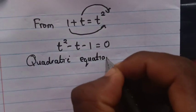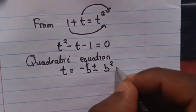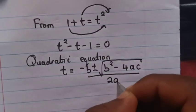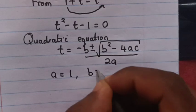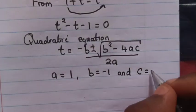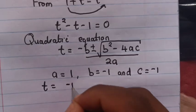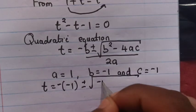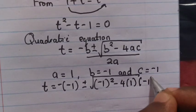From the general quadratic equation, t equals negative b plus or minus square root of b squared minus 4ac, all over 2a. From this quadratic equation, a equals 1, b equals negative 1, and c equals negative 1.